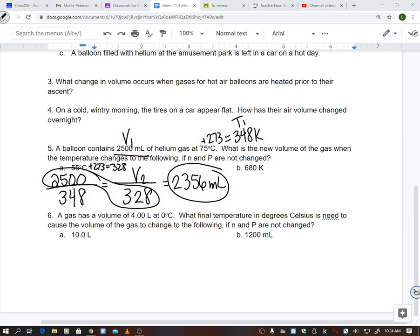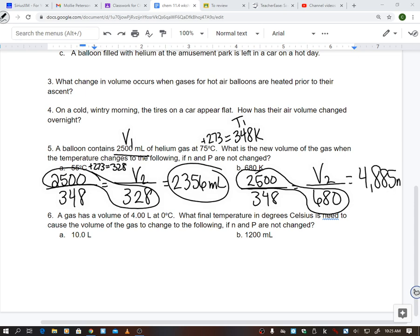Now on B, same thing, we're using this initial volume, 2,500. I've got my initial temperature. Now this one I do not need to change. They give it to me in Kelvin. We're going to keep it at 680. I need to find my new volume. I'm going to take 2,500 multiplied by 680, divide by 348, and your answer is 4,885 milliliters is your new volume, which makes sense, right? If my temperature increased, my volume should also increase. Same over here on A.